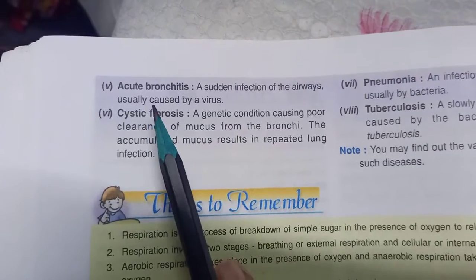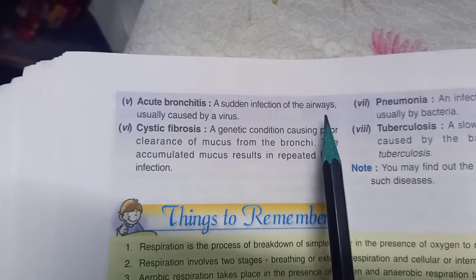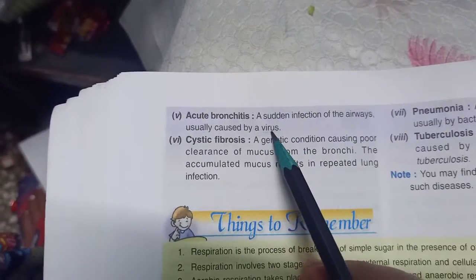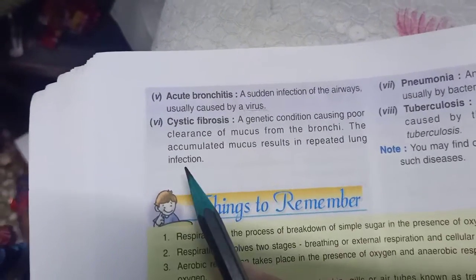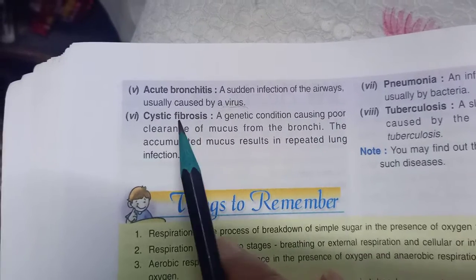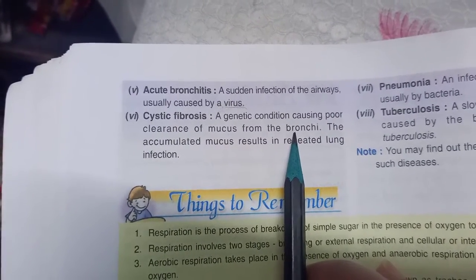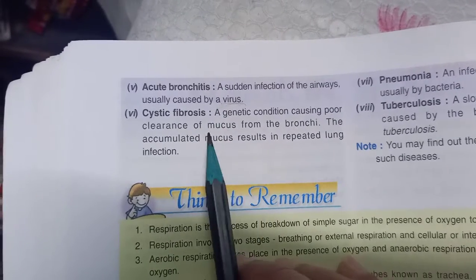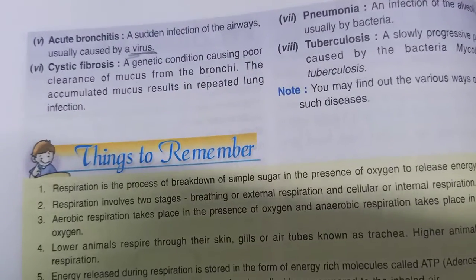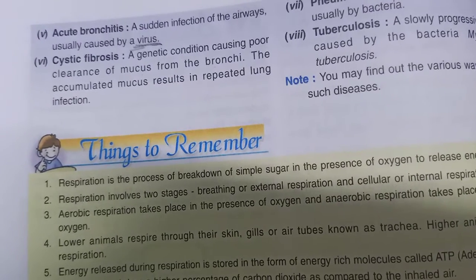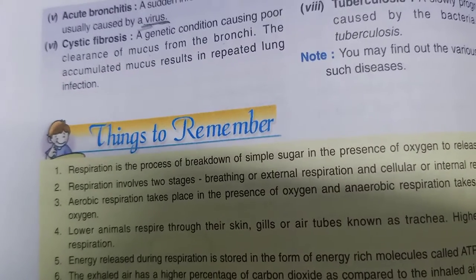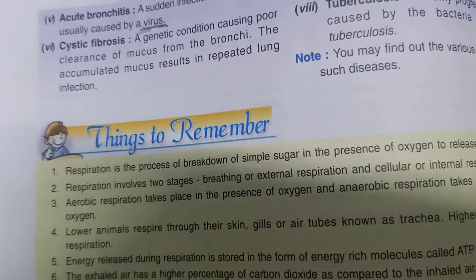The fifth disease is acute bronchitis — a sudden infection of the airways, usually caused by a virus. The next is cystic fibrosis, a genetic condition causing poor clearance of mucus from the bronchi. The accumulated mucus results in repeated lung infections.